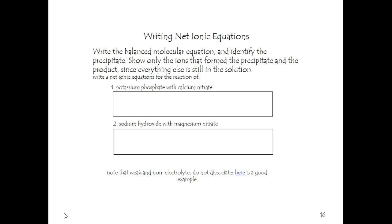Write a net ionic equation for the reaction of potassium phosphate. That should dissolve. It is a group 1 metal with calcium nitrate. That should dissolve. It is a nitrate. So the precipitate should be the calcium phosphate.